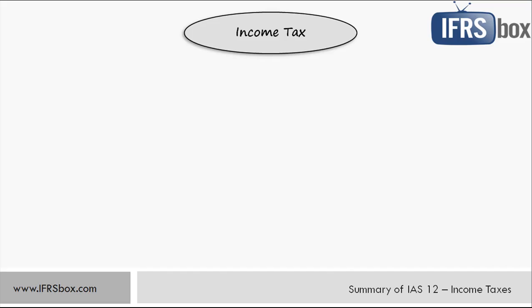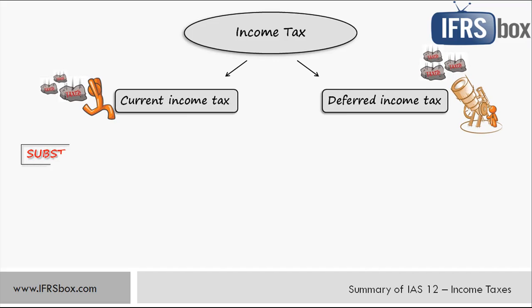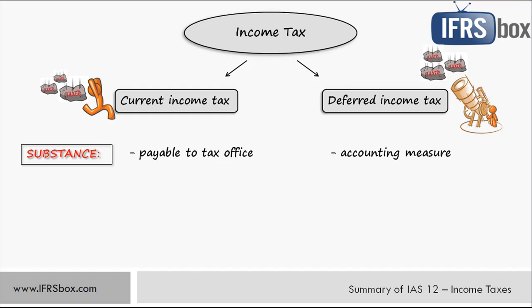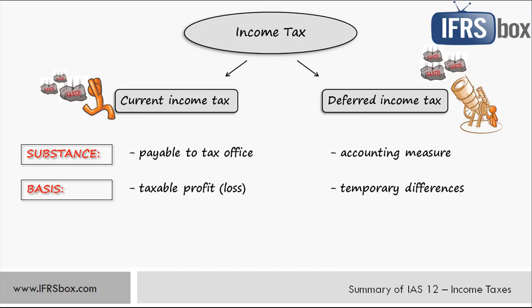Now it's time to talk about deferred tax and explain the differences between current and deferred taxation. The first difference is its substance: while current tax is the actual amount payable to tax authorities in relation to activities in the current period, deferred tax is an accounting measure used to match the tax effect of transactions with their accounting impact and thereby produce less distorted results. Another difference is the basis for calculation: current income tax is calculated from taxable profit, while deferred tax is based on temporary differences between the carrying amount and tax base of individual assets and liabilities.